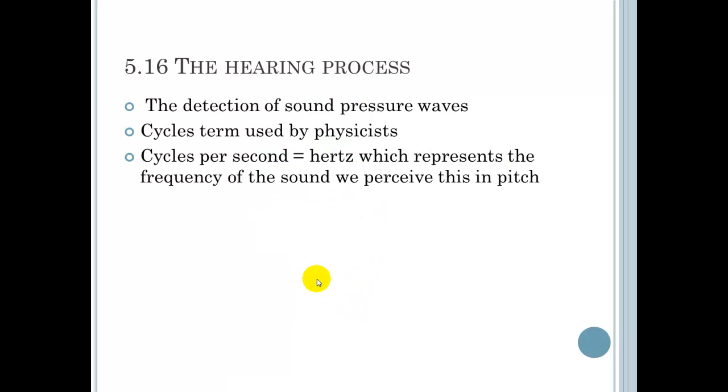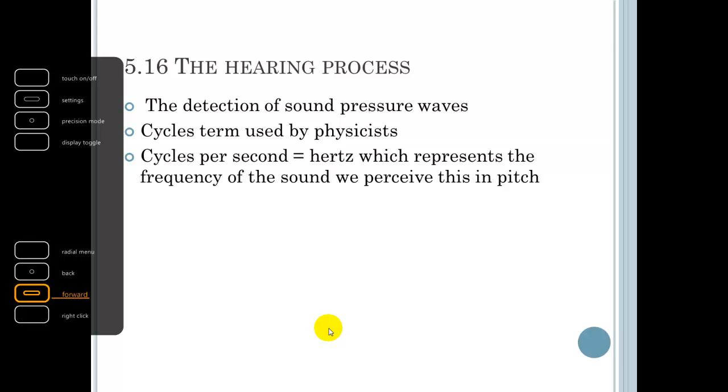The hearing process, the detection of sound and pressure waves, and cycles is what it's called. This term cycles is used by physicists to describe sound waves. Cycles per second equal hertz, which represents the frequency of the sound. We perceive this in pitch. So if someone has a high-pitched or a low-pitched sounding voice, that's how we're going to perceive it, the amount of hertz or cycles per second.